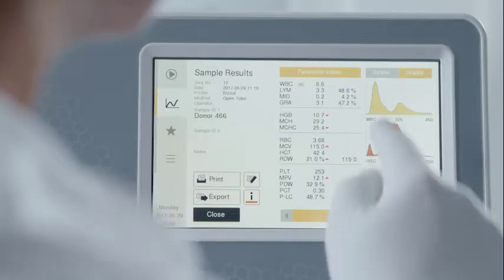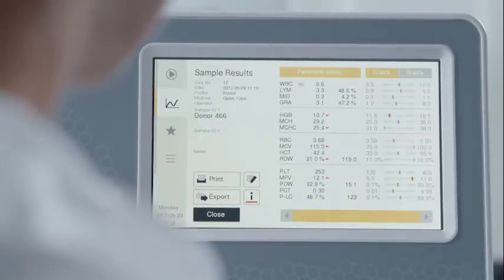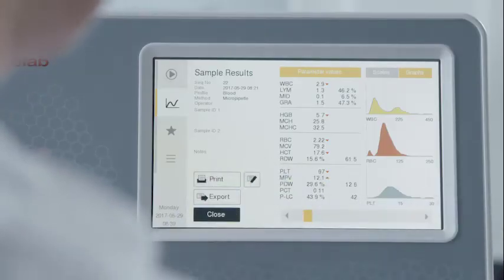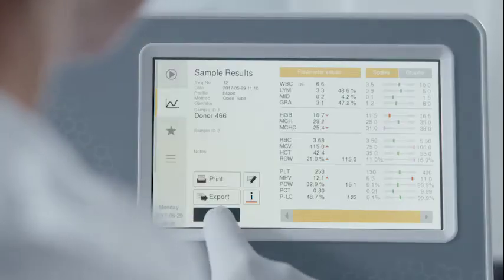SphereLab Alpha plus also lets you select how you view results. Choose between histogram or reference scale views, for example. Printouts are also customizable and cover any or all of the parameters you choose to display.